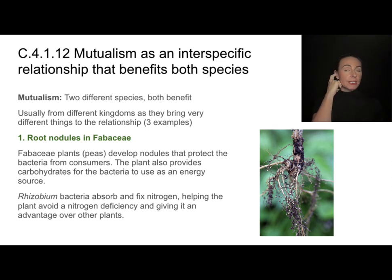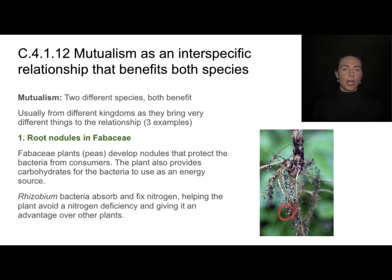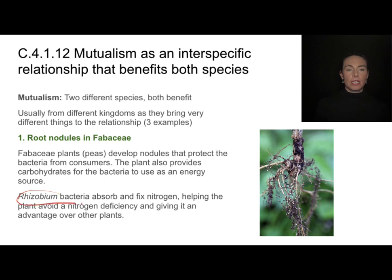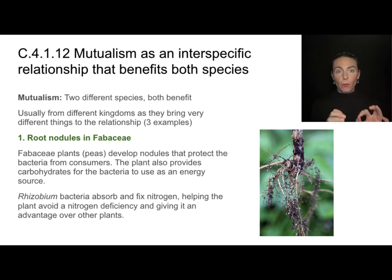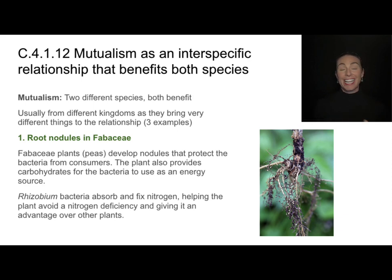One example involves pea plants, which belong to the legume family. If you look at their roots, you'll find small protective nodules. Inside are bacteria with which the plant has a mutualistic relationship. The nodules provide carbohydrates, energy, and protection for the bacteria. In turn, the rhizobium bacteria fix nitrogen and make it into an available form the pea plant can use — a huge advantage for both.